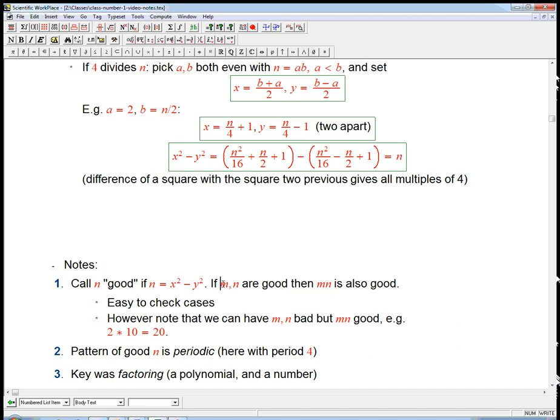One thing that's notable is that if m and n are good numbers, then it's not hard to see that mn is also good. Here it's probably easiest just to check the cases. We'll see an algebraic argument for that in the sum of squares case.